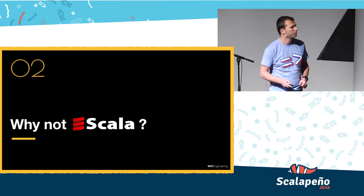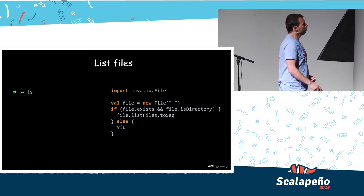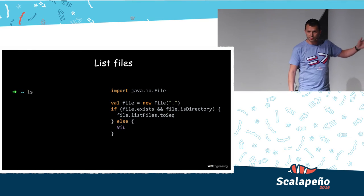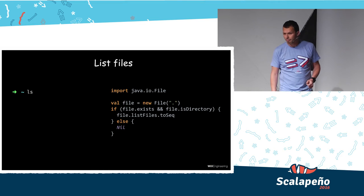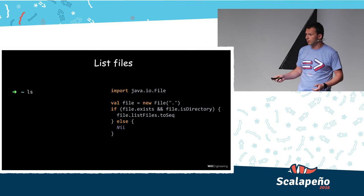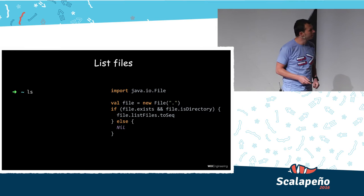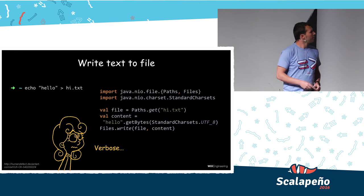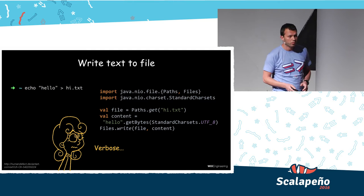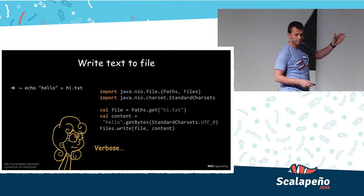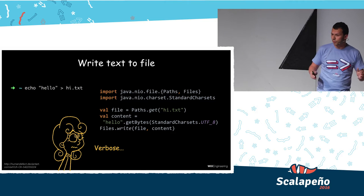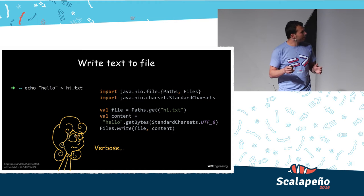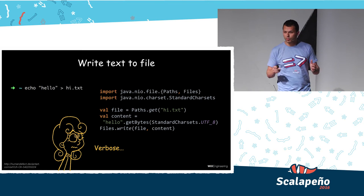Let's try writing it. A simple task like listing files, which is very simple in Bash, unfolds to more than five lines of code in Scala. I'm not going to show you the recursive examples. And writing text to a file — again, very simple in Bash, but in Scala this task is much more verbose. So definitely, Scala isn't what we're looking for.